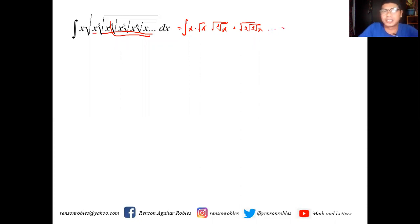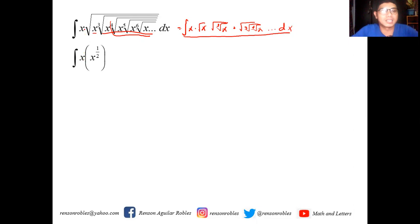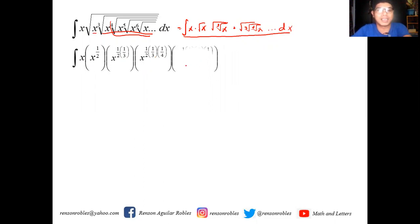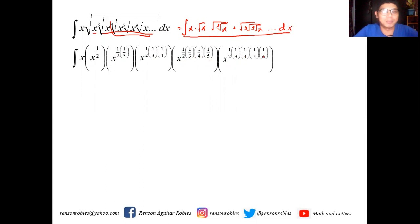By applying the laws of radicals and exponents, this expression can be written as: x, then x raised to one-half, then x raised to one-half times one-third (which is the square root of the cube root of x), then x raised to one-half times one-third times one-fourth, then x raised to one-half times one-third times one-fourth times one-fifth times one-sixth, and it goes on and on, then dx.